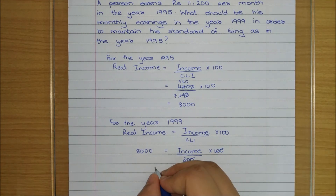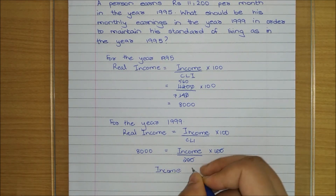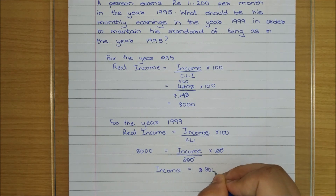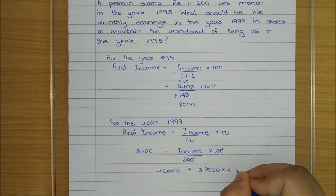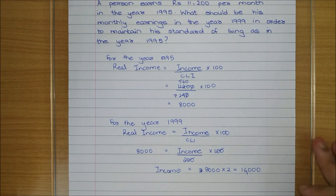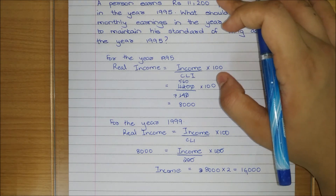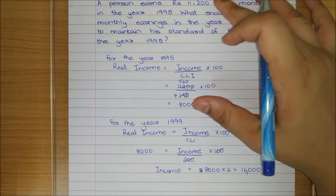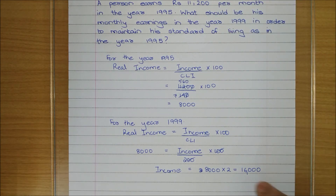For the year 1999: real income = (income / cost of living index) × 100. So 8000 = (income / 200) × 100. Therefore income = 8000 × 2 = 16,000. He should earn 16,000 rupees in 1999 to maintain the same standard of living. With exercise 5.3 now complete, he was earning 11,200 before but now needs 16,000 for the same lifestyle.